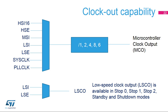The low-speed clock output feature allows you to output on a pin the LSI or LSE clock. The low-speed clock output is available in stop 0, stop 1, stop 2, standby, and shutdown modes.